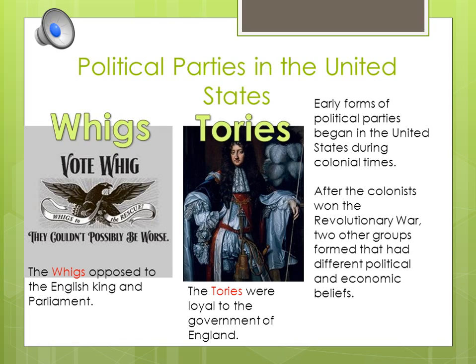After the colonists won the Revolutionary War, two other groups started to form with different political and economic beliefs. There was the Federalist Party, and they preferred a powerful central government — they wanted the federal government to pretty much determine law and justice. Then there was the Anti-Federalist Party, and they were really into more independent states where the states had more of a say and a less powerful government.